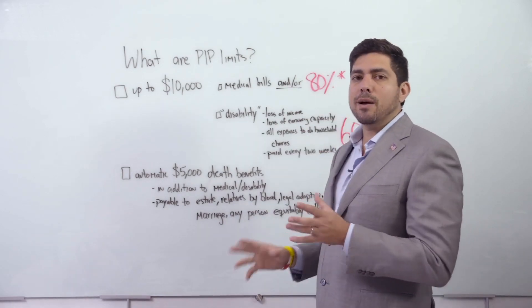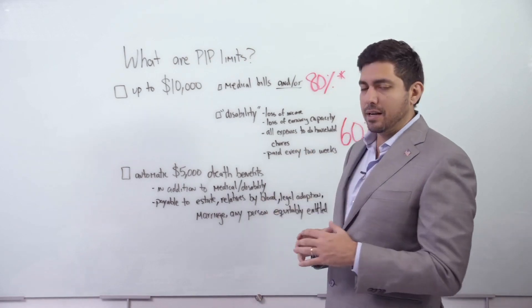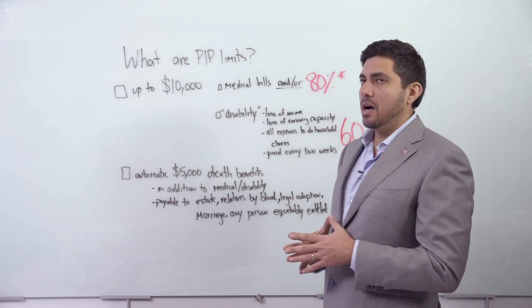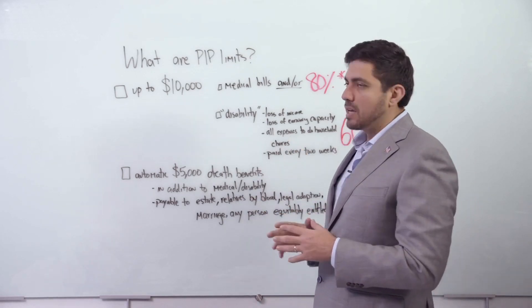For example, 'Oh, my neck hurts. I can't wash the dishes like I used to. I need to pay somebody to wash my dishes.' It should cover that. But out of thousands and thousands of PIP claims, I've never seen anybody actually get paid for that.